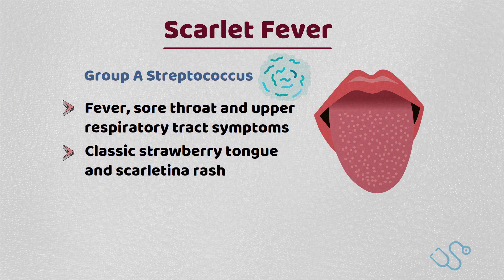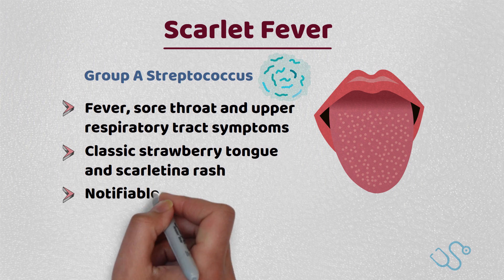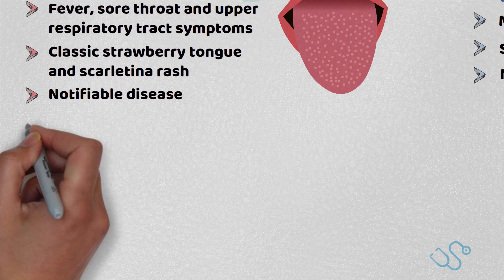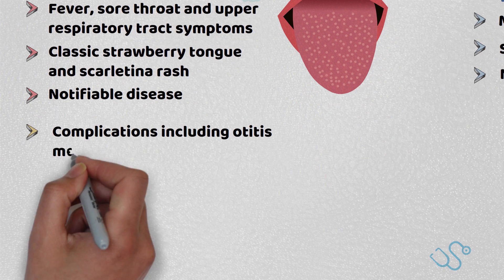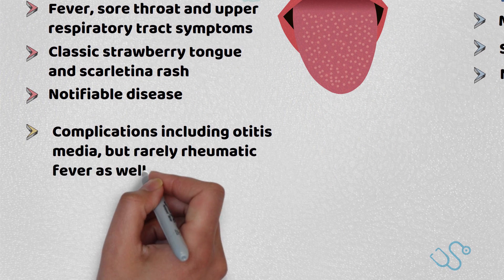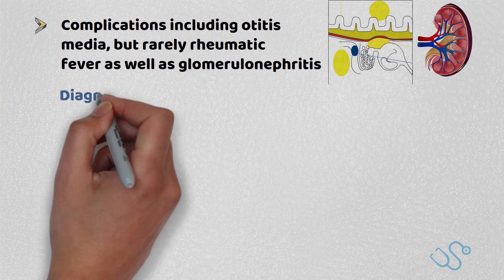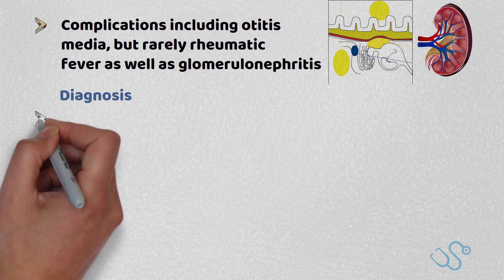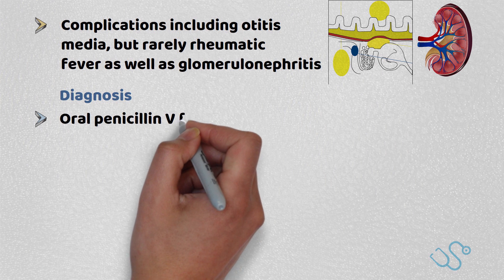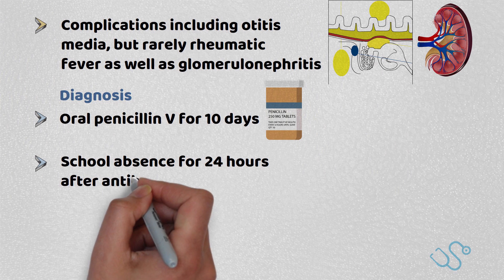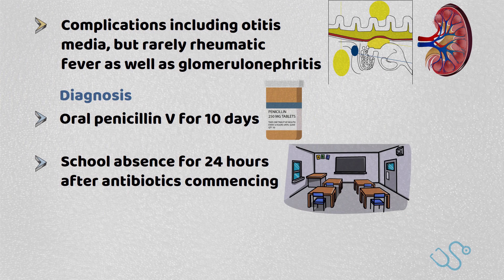Some cases even end up with desquamation of the skin, typically on the hands and feet. It is a notifiable disease. Severe cases can lead to complications including otitis media, and rarely rheumatic fever and glomerulonephritis. Diagnosis requires a throat swab, but oral penicillin V for 10 days is usually commenced, with school exclusion advised for 24 hours after antibiotics are started.